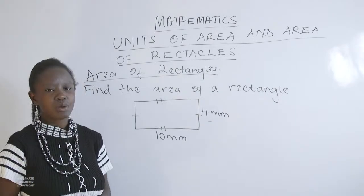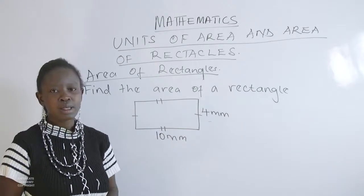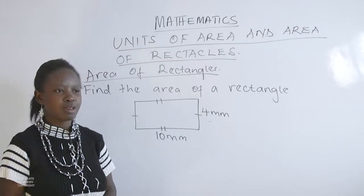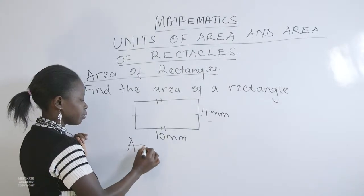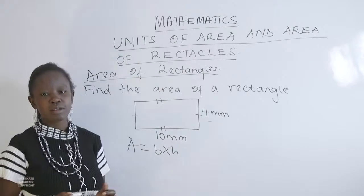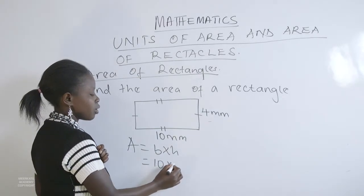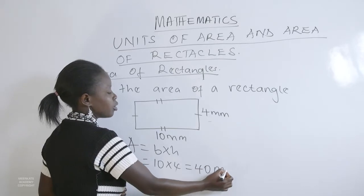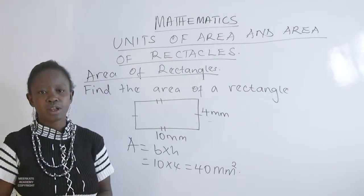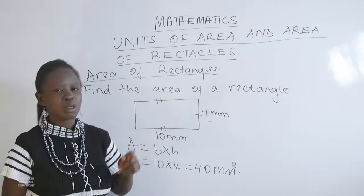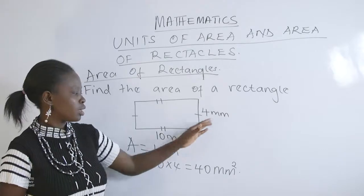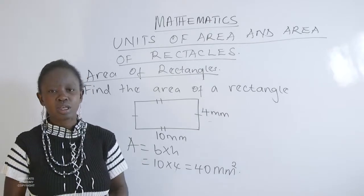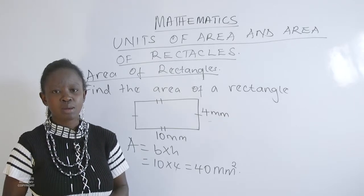The first example requires us to get the area of a rectangle with a base of 10 millimeters and a height of 4 millimeters. Area is given by base times height. Our base is 10 and our height is 4. 10 times 4 gives us 40. Our units for area are given in square units, and we had millimeters as the unit of length, so our area will be 40 square millimeters.